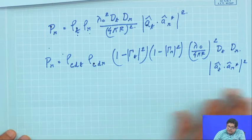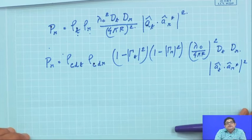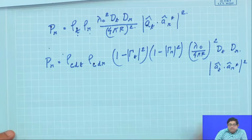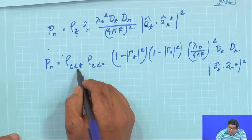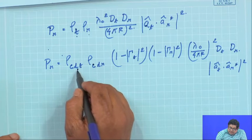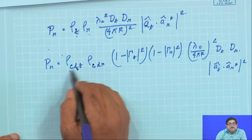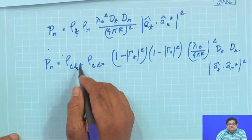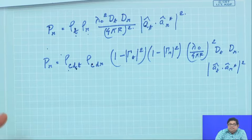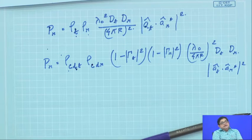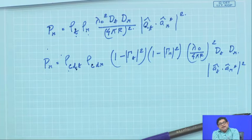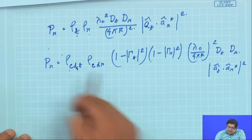This formula is called the Friis transmission equation. You see that the conductor and dielectric losses are taken together — it can also be broken into conductor loss and transmission loss separately, but generally they are taken together because it is very difficult from measurement to distinguish what is conductor loss and what is dielectric loss. So the two losses are put together.